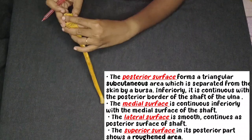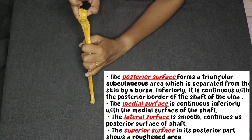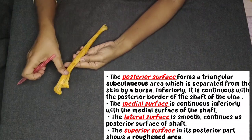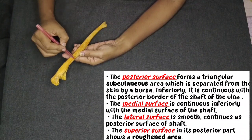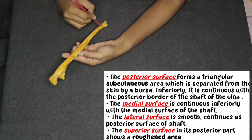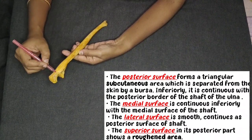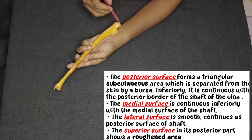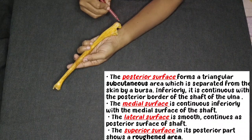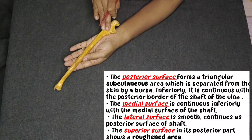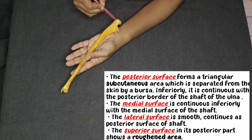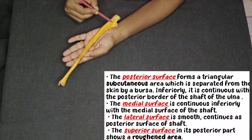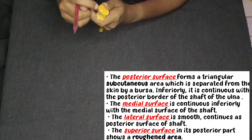That is all about the posterior surface. Coming to the medial surface — the medial surface of the olecranon process is continuous with the medial surface of the shaft of the ulna. Coming to the lateral surface — if you look at the lateral surface it is smooth, and it continues with the posterior surface of the shaft of the ulna.